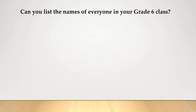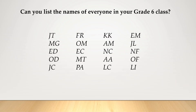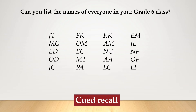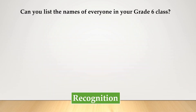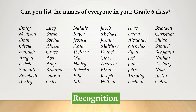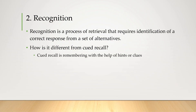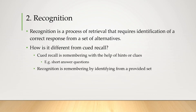Let me give you an example to illustrate. Do you think you can list the names of everyone in your grade six class? If I assist you by giving you their initials and asking, 'Can you remember their names now?' — that's cued recall. I'm not giving you the names, just something that will hopefully help. I could even give you a stronger cue, like a picture of your grade six class, and see if you can remember names — but that's still cued recall. Recognition would be if I gave you a list of a whole bunch of names and you had to identify the correct names within that group. So cued recall is remembering with the help of hints or clues — like short answer questions in an exam — whereas recognition is remembering by identifying from a provided set, like multiple choice questions.